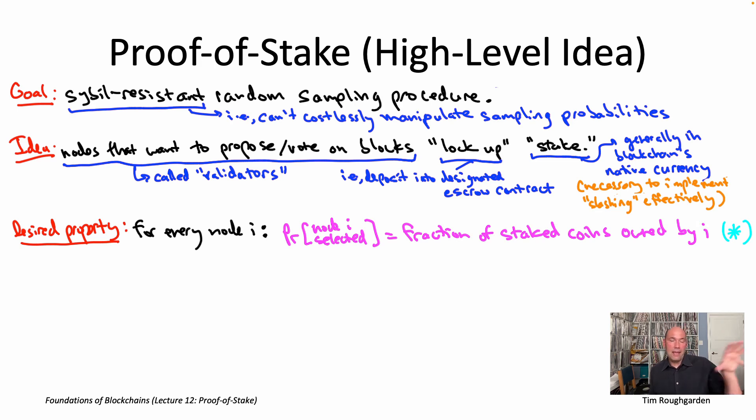And so first of all, let's observe, this is the analog of corollary one from lecture number nine. Let's observe that if you have a random sampling procedure that meets this property star, that is in fact a Sybil resistant random sampling procedure. And so this property is immediate, right? If we just look at that magenta equation, you will notice that the right-hand side of that equation is independent of the number of IDs that node i is using. It doesn't matter how the node spreads its stake over various accounts, all that matters is the total amount of stake that it controls. Okay, so the right-hand side is independent of the number of IDs. Therefore, the left-hand side is as well, and that's exactly what Sybil resistance means. So it is true that a node can manipulate the probability with which it's selected, but only by acquiring and locking up additional stake.